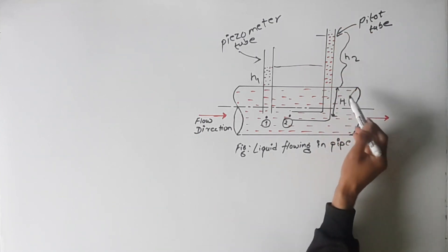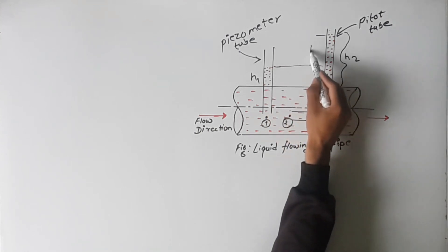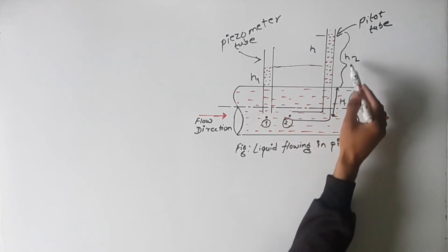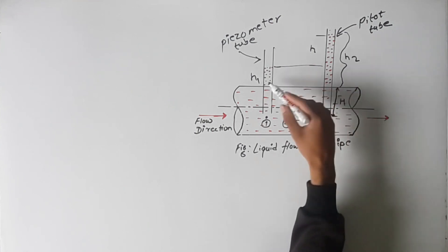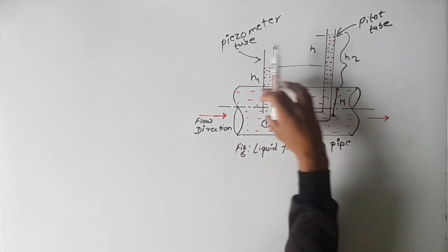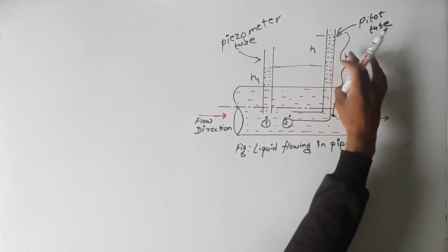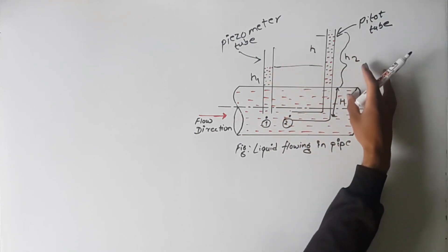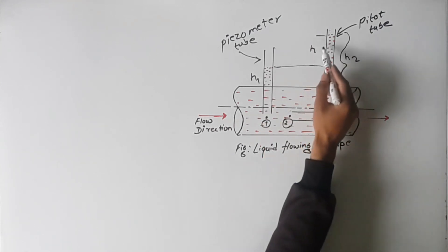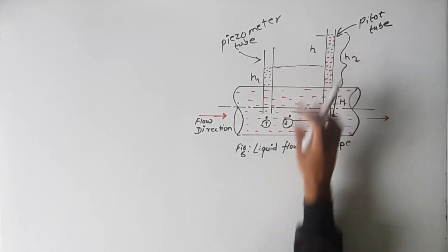Now we can calculate the difference of pressure head. Let this be h. h is the difference of pressure head: (h + h2) minus (h + h1). This simplifies to h2 minus h1. This h is the difference of head between the piezometer and the pitot tube.